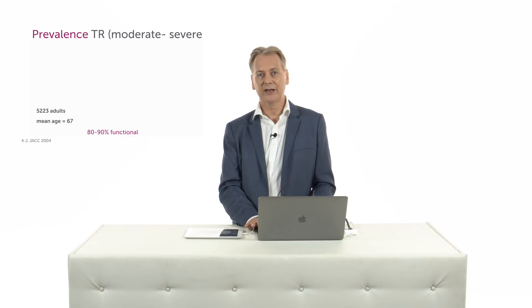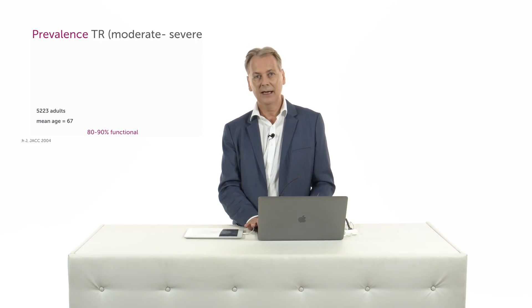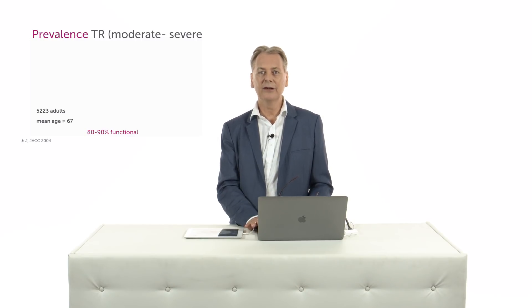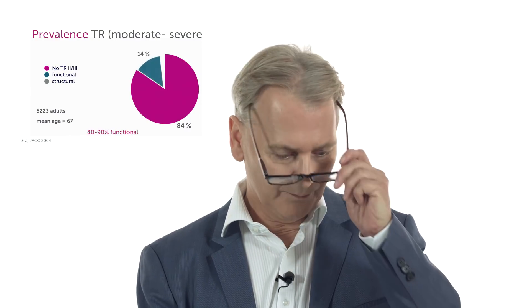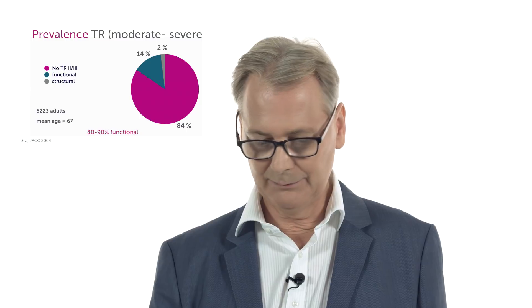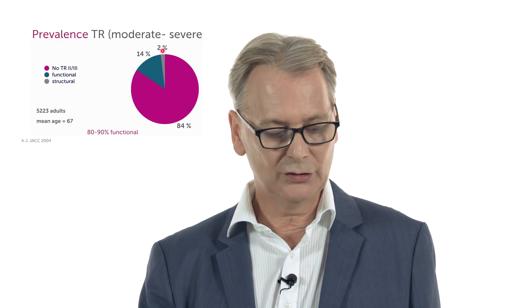What is the prevalence of tricuspid regurgitation? It's a very common finding, and even moderate to severe tricuspid regurgitation is not an uncommon finding. Looking at a study of over 5,000 patients, 80 to 90 percent had functional tricuspid regurgitation while only 2 percent had structural regurgitation.